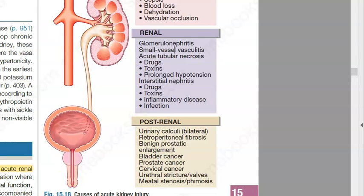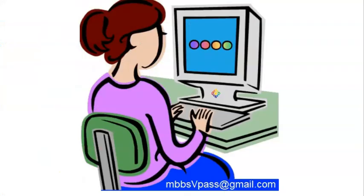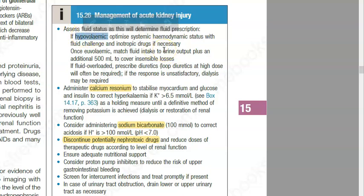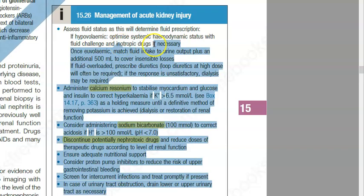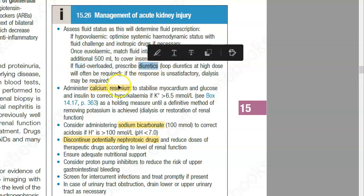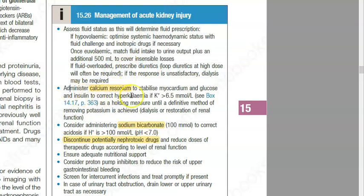These are the causes of acute kidney injury. These patients can have associated conditions like heart disease and diabetes. Management is based on the cause: if they have hypovolemia, give blood or fluids; if the heart is not fine, give inotropic drugs; if there is fluid overload, give diuretics; and give calcium resonium to stabilize the heart.